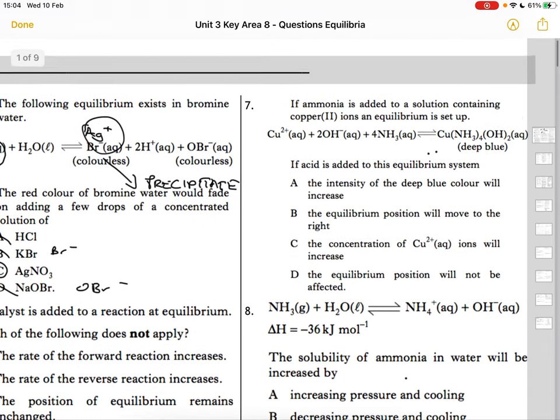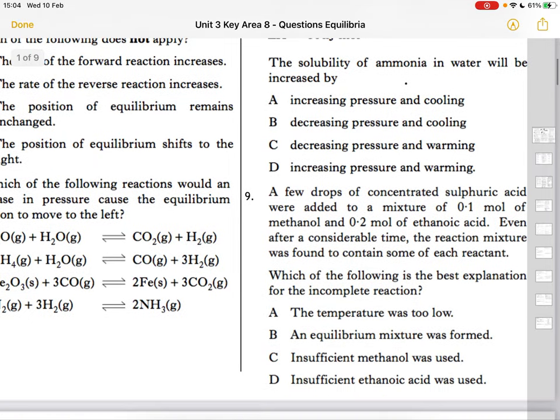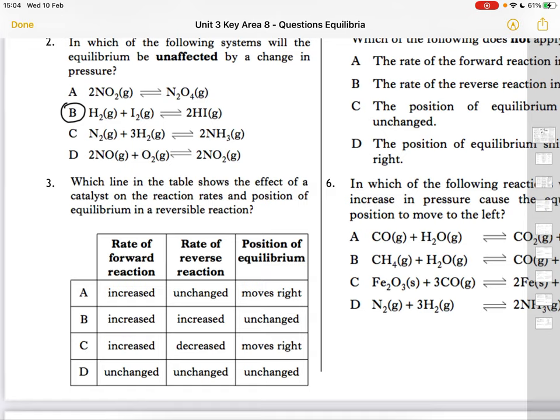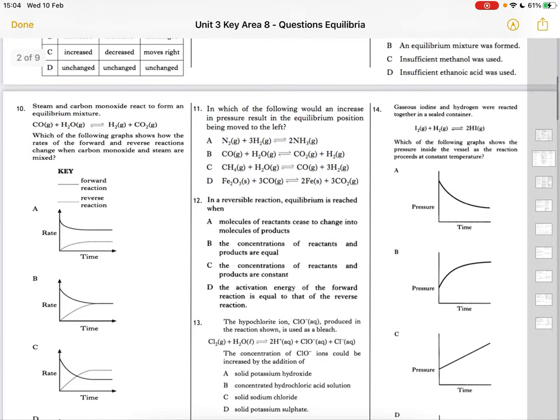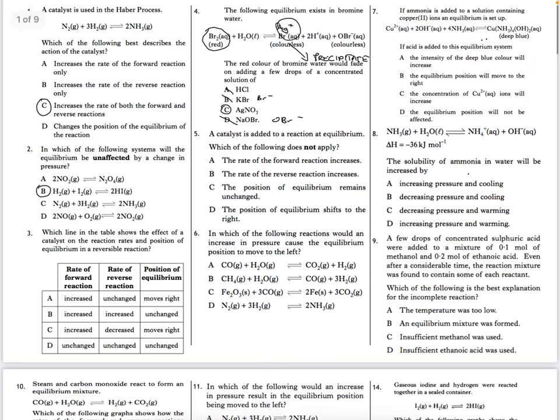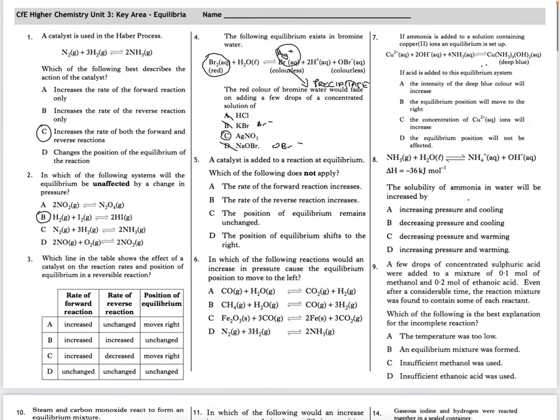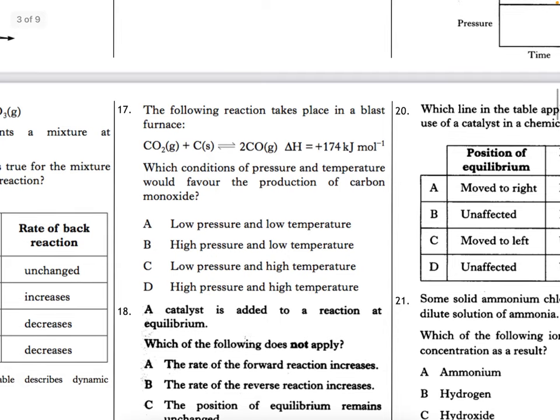Let's see if we can try another one. Let's try a temperature one. Let's try this one. So number 17. The following reaction takes place in a blast furnace where you've got carbon dioxide and carbon and this produces carbon monoxide. Which conditions of pressure and temperature would favour the production of carbon monoxide?